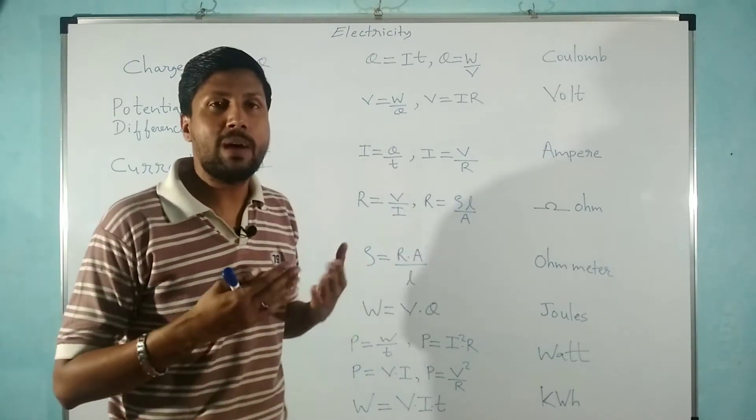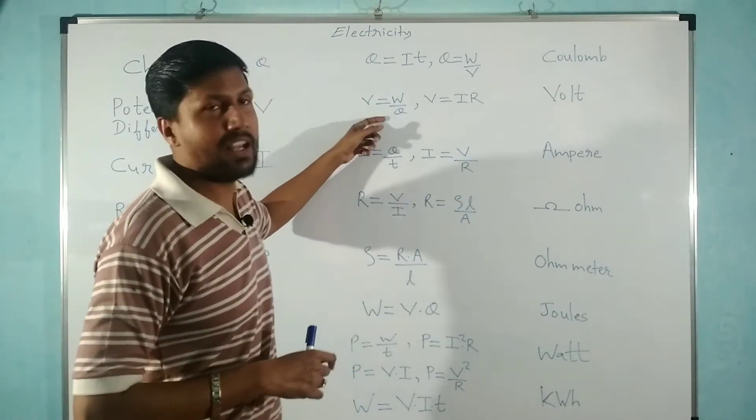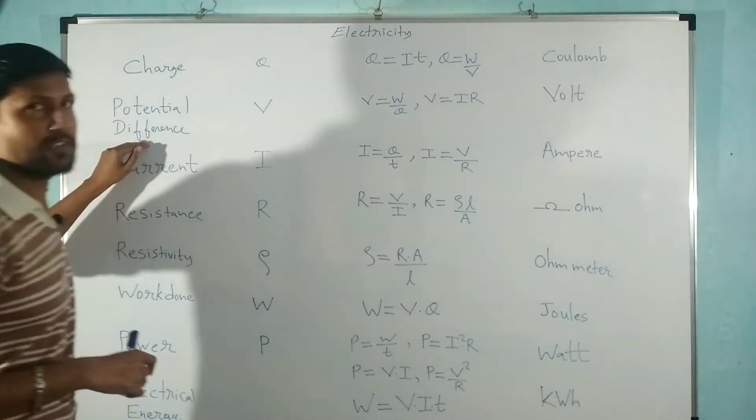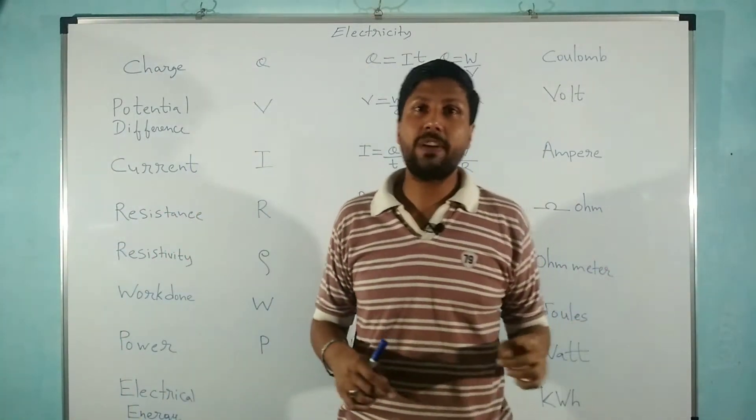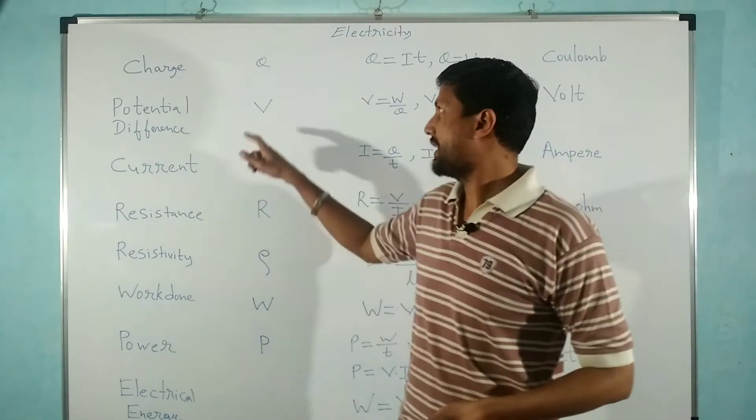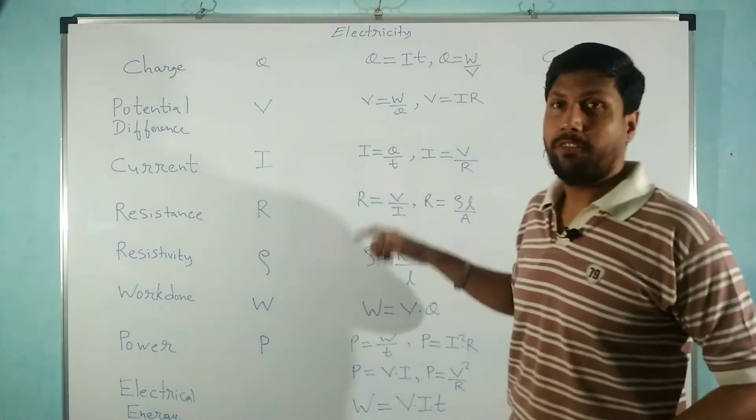The next physical quantity is potential difference. The unit is volt and its symbol is capital V. Its formula is V equals W by Q by definition, and V equals IR by Ohm's law.